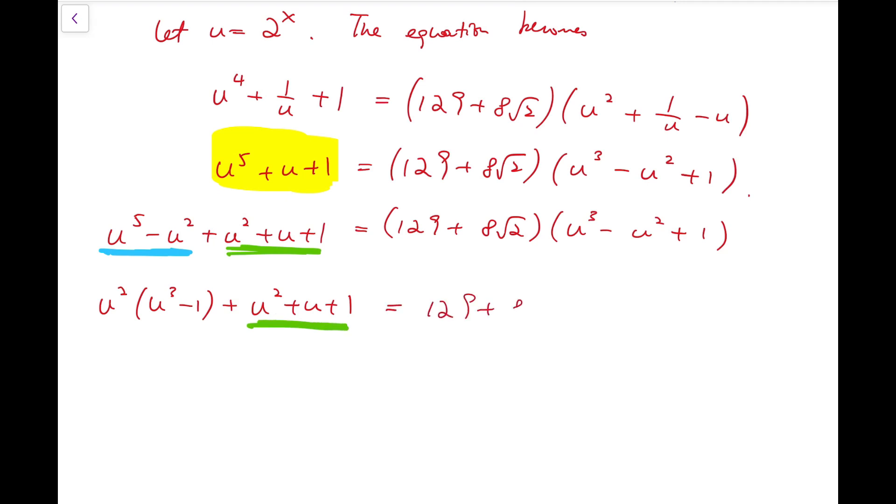I'll keep copying the right-hand side. Now I have u squared times u minus 1 times u squared plus u plus 1 added by u squared plus u plus 1 equals this.